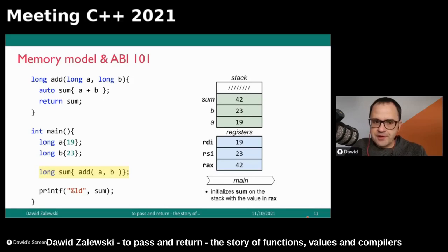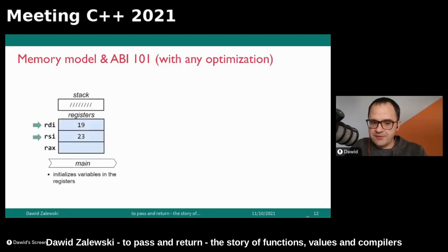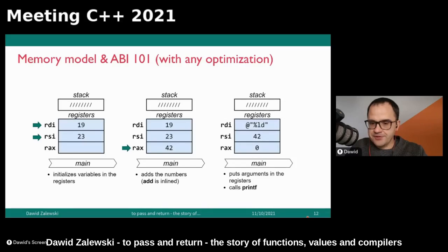That's how the conventional model works. In reality, it looks a bit different. When you compile this piece of code with any kind of optimizations turned on — be it O1 or any higher — the variables A and B are initialized directly in the registers, so there will be no stack usage whatsoever. RDI and RSI are going to be in the registers. The sum function is going to be inlined. Since it's inlined, the addition will be just one instruction and the result will go directly to the register RAX. After some shuffling of the registers, they will be prepared for the next function call to printf. The number to be printed is stored in RSI, RDI holds the address of the formatting string, and RAX holds zero, which is the variable arguments to printf.